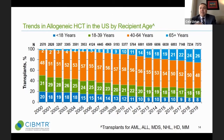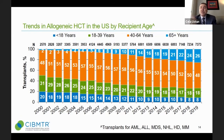Over time, allogeneic transplantation numbers are not only increasing, but we are doing more and more transplantations in older patients. Nowadays there is really no age cutoff. At our center we go up to 75, and if I have a fit person at 76, 77, or 78, can I do transplantation? Yes. The age cutoff is disappearing. This is particularly important for MDS — myelodysplastic syndrome — which is an older patient disease.